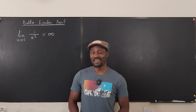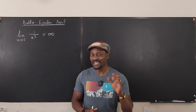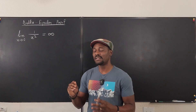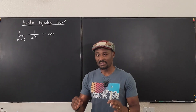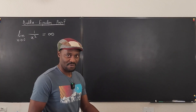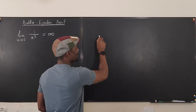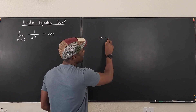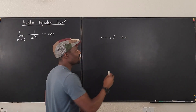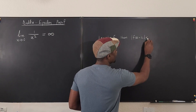Hello, welcome to another video. I have a delta epsilon proof of a limit and this one is slightly different from what we're used to. Typically we'll have a finite limit and would state the condition for the limit being true. What we usually say is: for every epsilon greater than zero and for every delta greater than zero, if the absolute value of x minus a is less than delta, then we have the absolute value of f of x minus L is less than epsilon.